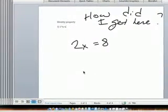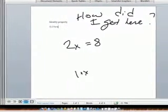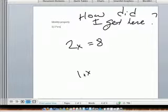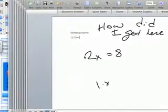Now, I'm going to wind up with 1 times x. Well, how did I get from 2x equals 8 to 1 times x?